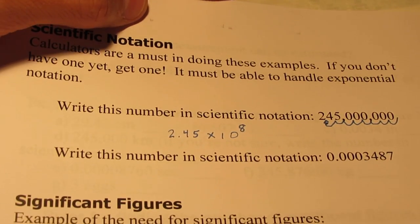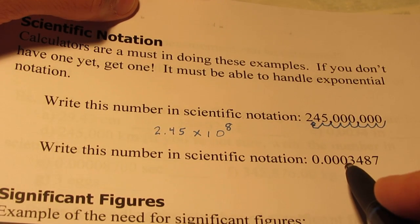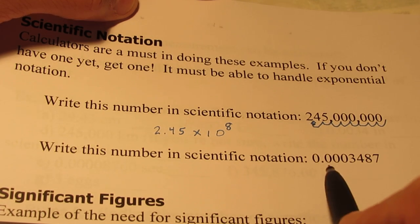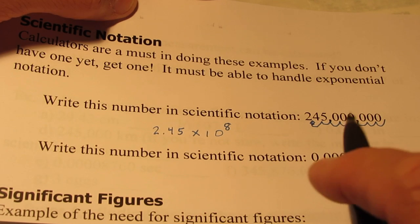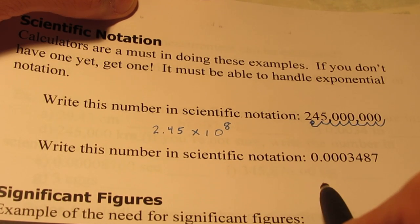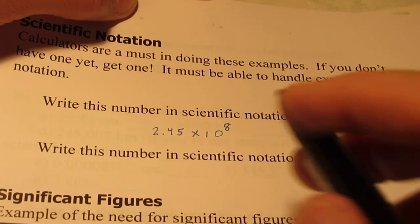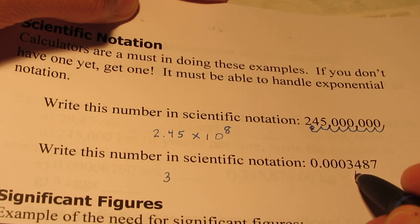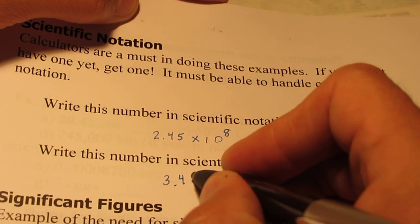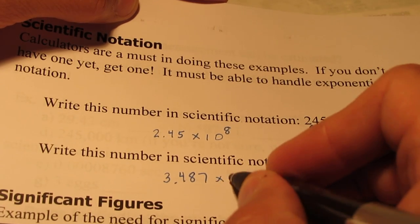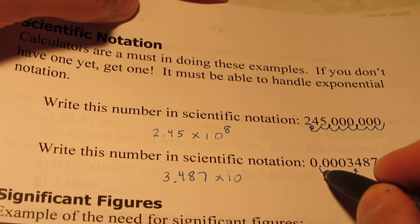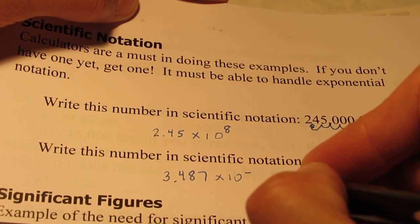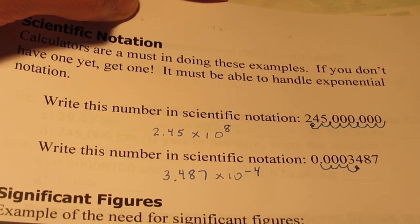Alright, what about a number smaller than one. So, 0.0003487. This number is smaller than one. We're going to choose a value to begin with that is larger than one but smaller than ten. So, I'm going to choose 3.487. And this time, of course, we're moving the decimal in the other direction. One, two, three, four places. So, it's 3.487 times ten to the negative fourth power.